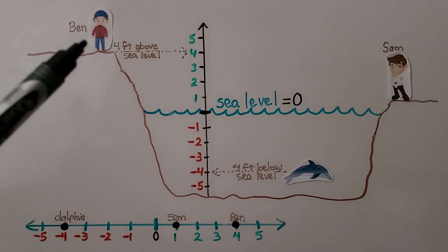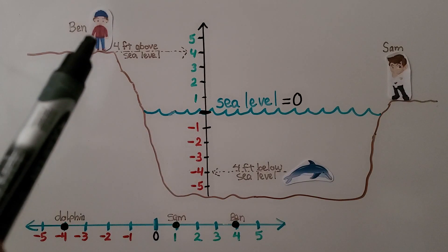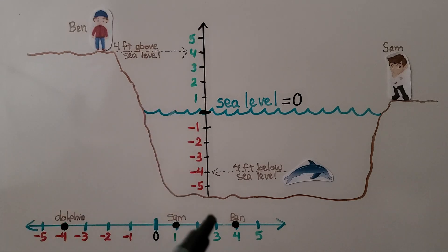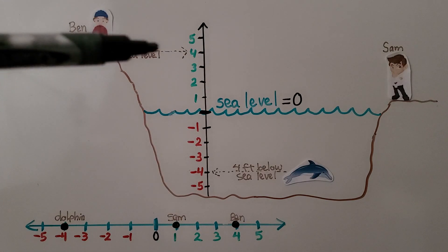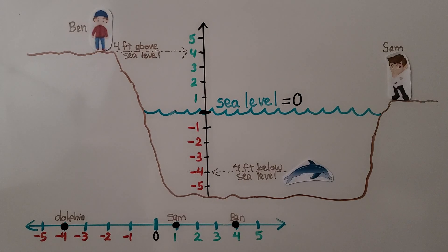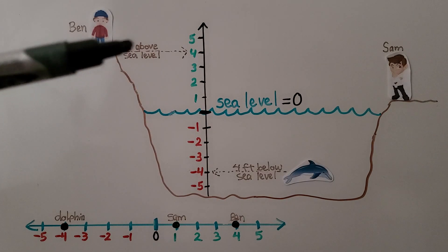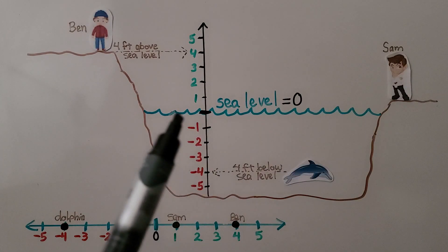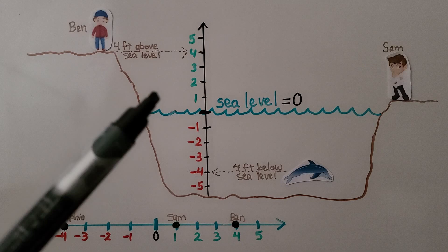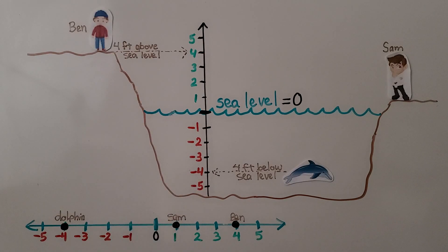Here we can see Ben and Sam. Ben is up here, Sam is on lower land, and the sea level is zero on this vertical number line. Ben is four feet above sea level, and the dolphin is four feet below sea level — Ben and the dolphin are the same distance from zero. Out of these three, Sam is closest to sea level at about positive one, which is closer to zero than positive four or negative four. The dolphin has the least elevation because it's lower than Ben or Sam.